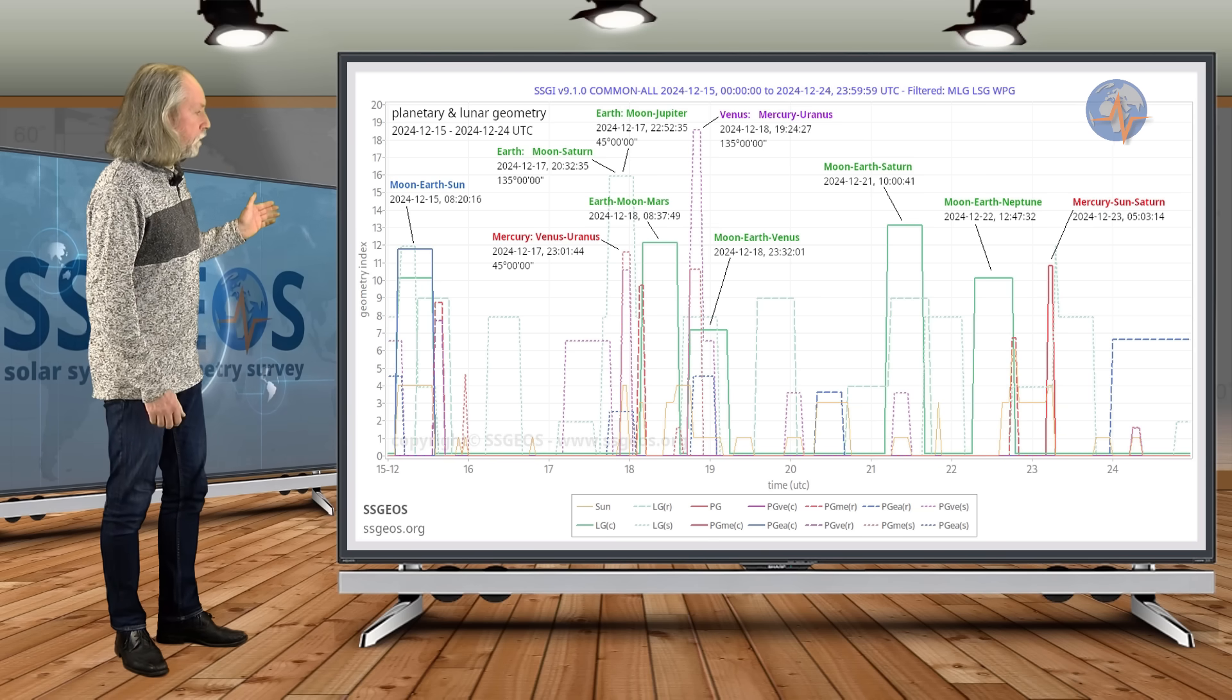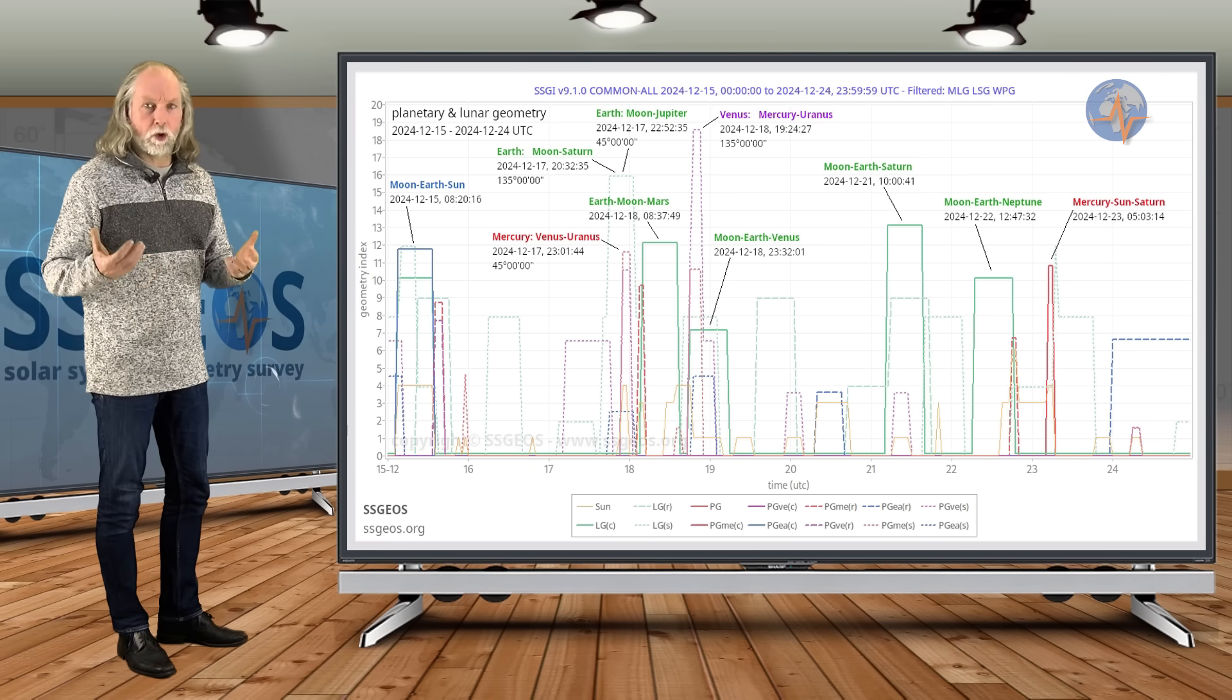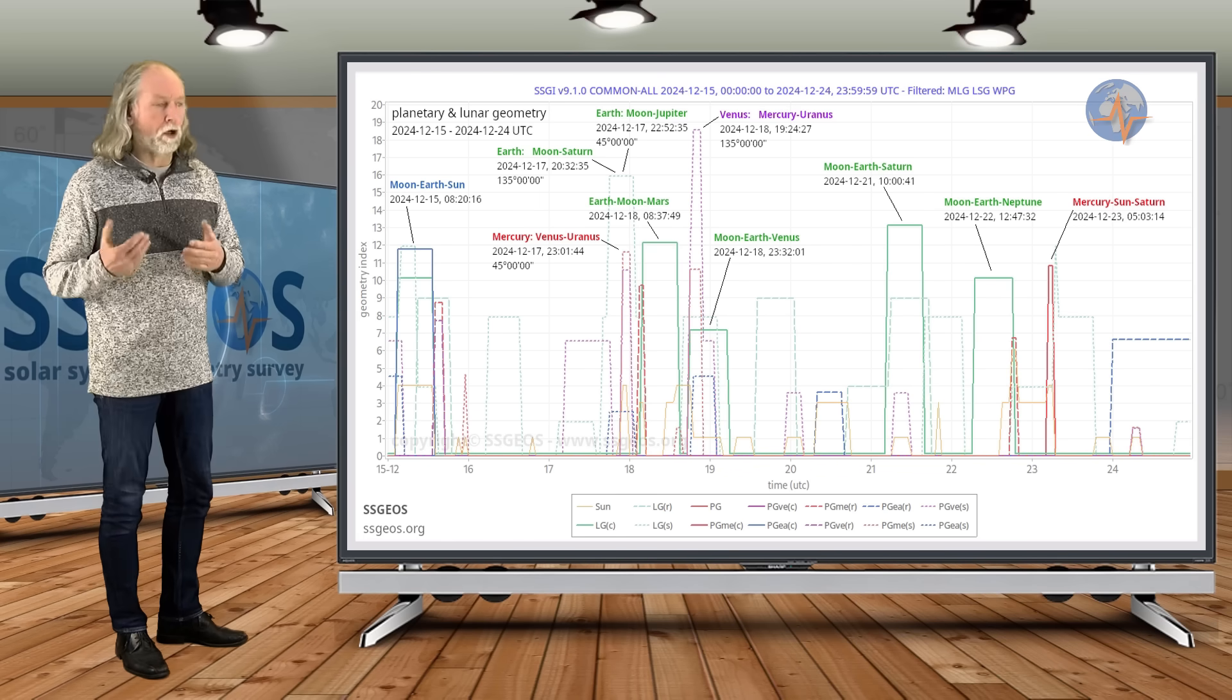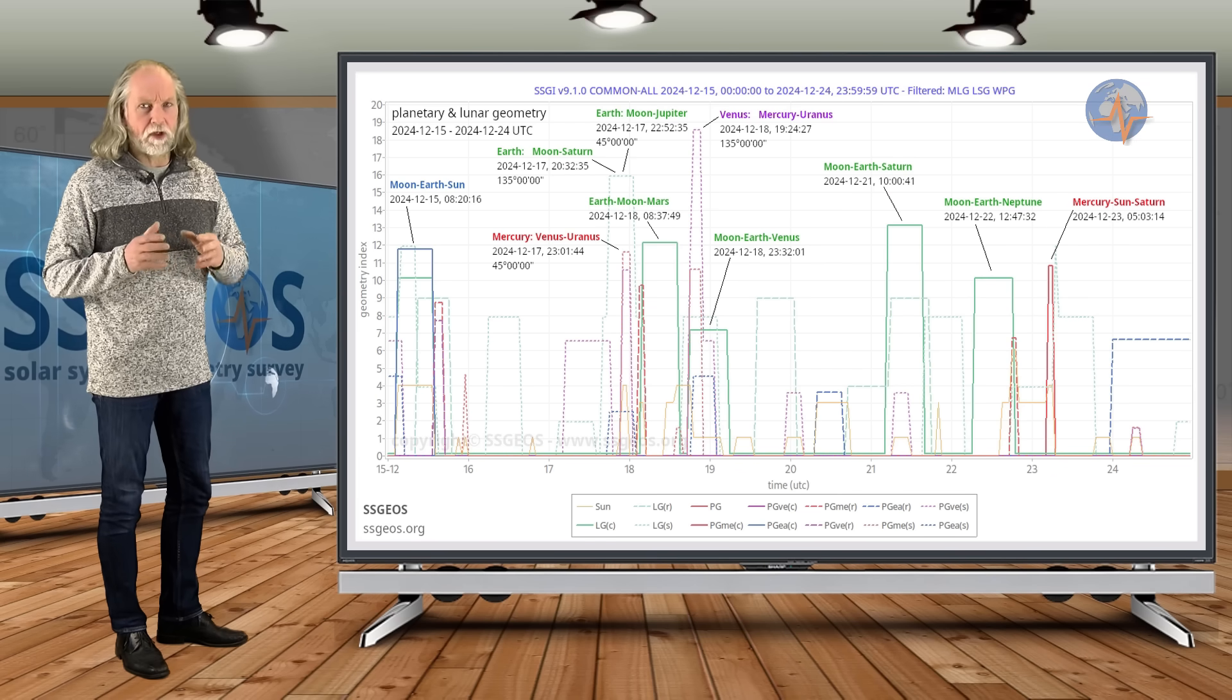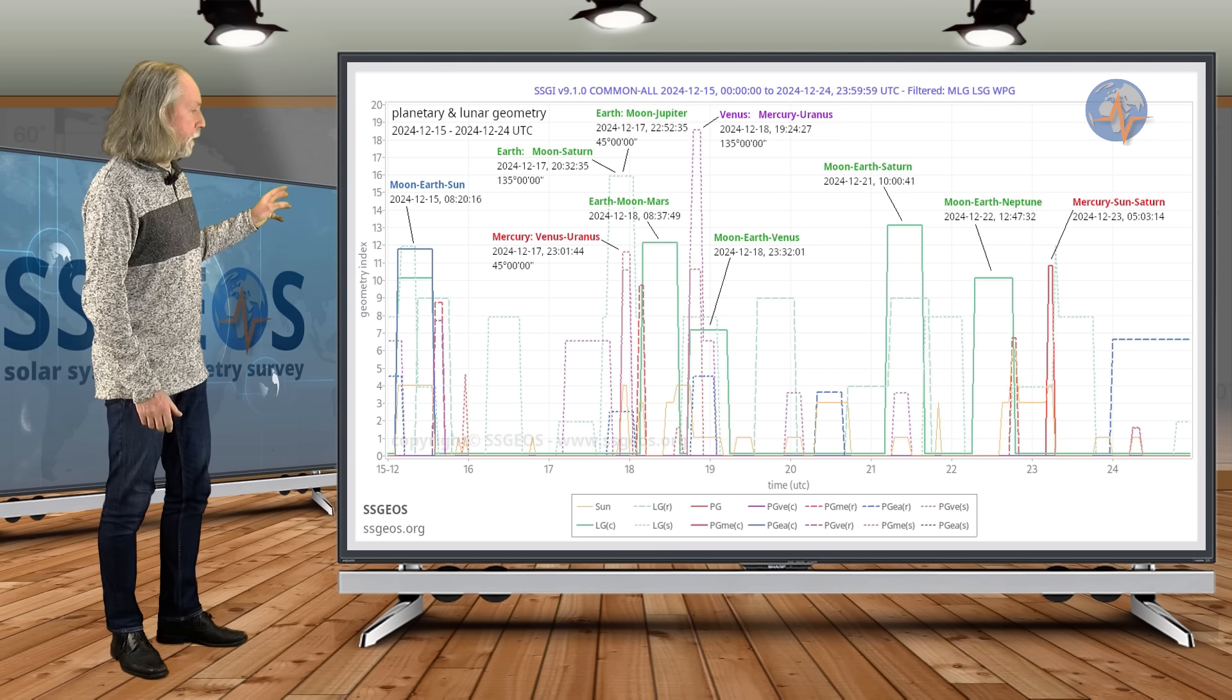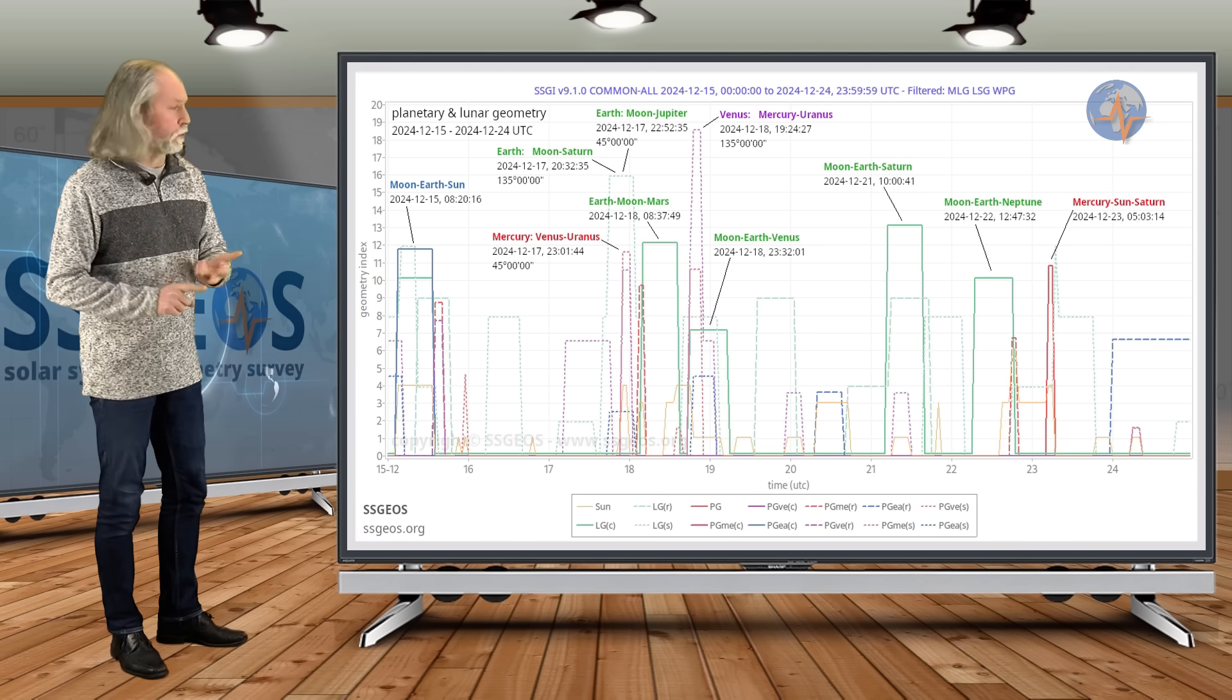Then we have two lunar conjunctions with Saturn and Neptune—I should say opposition, but we always use the term conjunction here—on the 21st and the 22nd. We often see some response following these types of lunar conjunctions, sometimes a larger earthquake. I would mark around the 24th, 23rd-24th, also as potentially more critical. But keep in mind the convergence that we have—the only really critical convergence in my opinion on the 18th. Around the 18th we have semi-right angle lunar geometry with lunar conjunction and also semi-right angle planetary geometry with Mercury, Venus, and Uranus, and that's always critical.